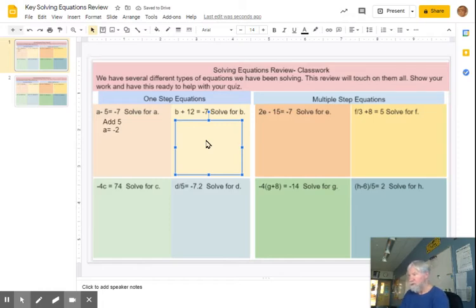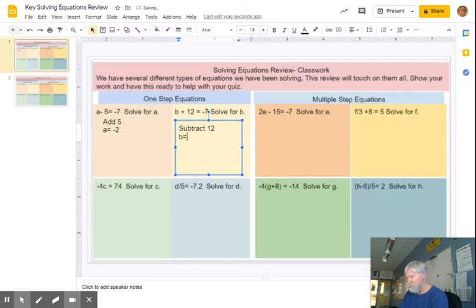Here, we got B plus 12. All right, so pause, answer it, and then come back to make sure you get the same thing. So when I subtract 12, then I get B equals negative 19.